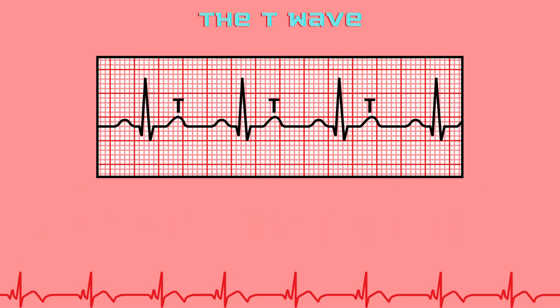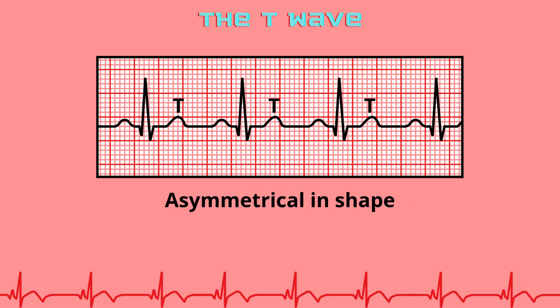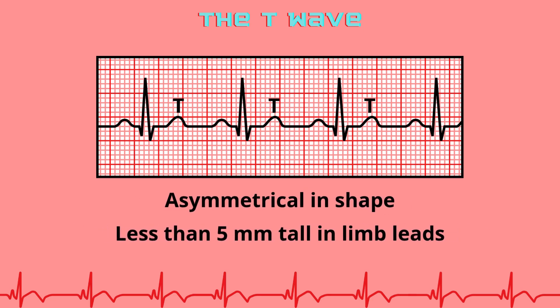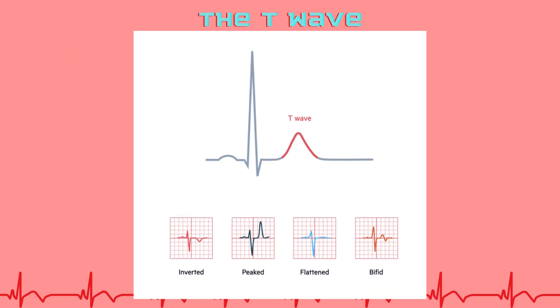The T-wave reflects ventricular repolarization. It should be upright in most leads, especially leads 1, 2, and V3 to V6. It is normally asymmetrical in shape, less than 5 mm tall in limb leads and less than 10 mm tall in chest leads. Inverted or peaked T-waves may suggest ischemia, hyperkalemia, or other pathology.